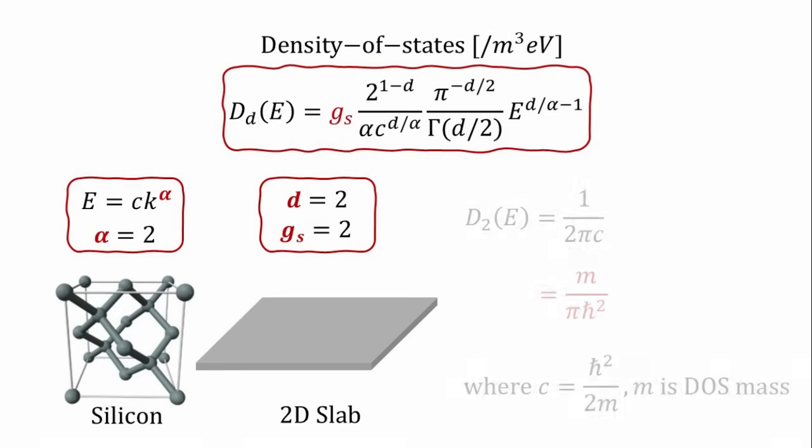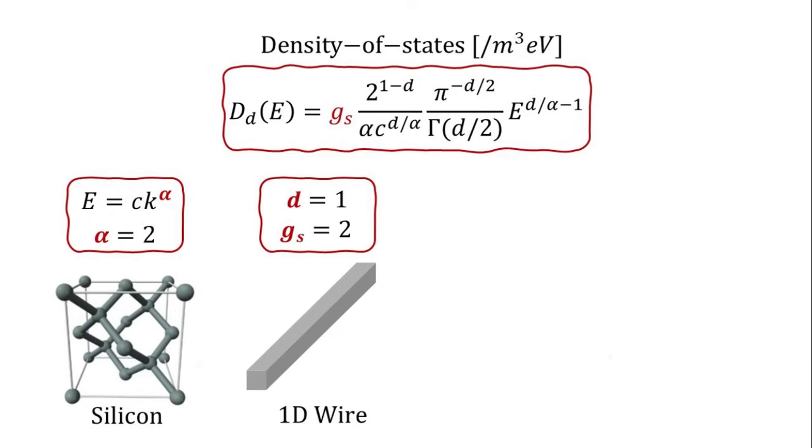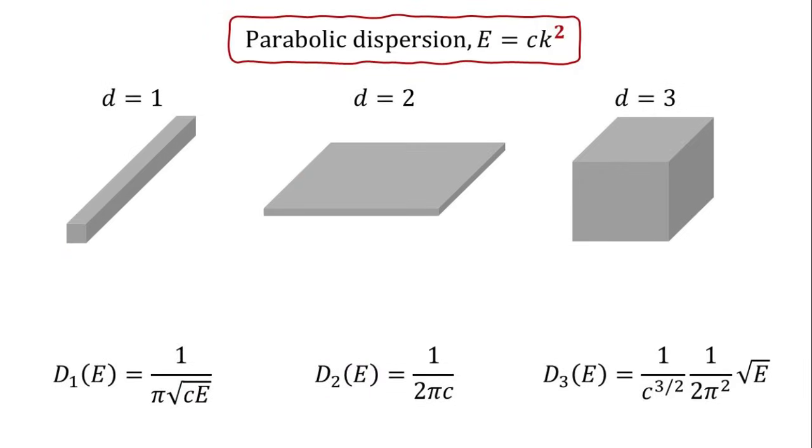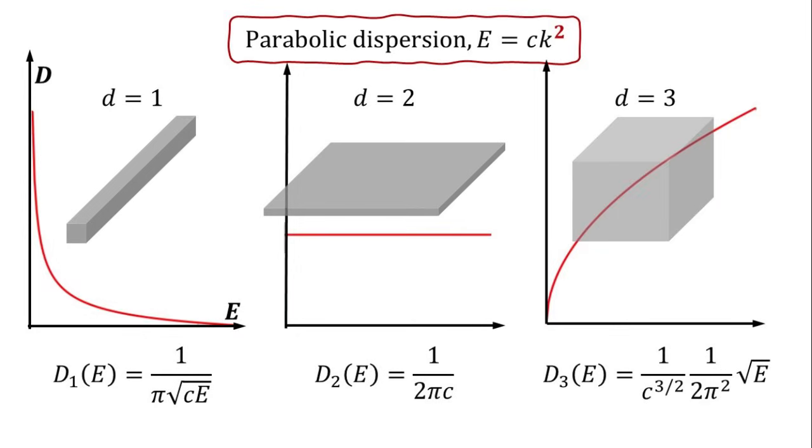For a 2D slab, the density of states is constant with respect to energy and depends only on the density of states mass. Finally, for a 1D nanowire, the density of states is inversely proportional to the square root of energy. In summary, we see how dimensionality significantly influences the density of states in a material. In general, as dimensionality increases, the density of states tends to be larger at higher energies, reflecting a trend towards a higher state density in materials with greater dimensionality.